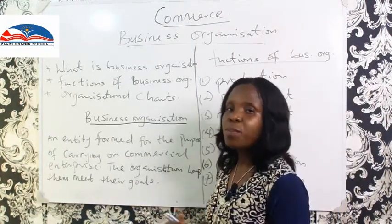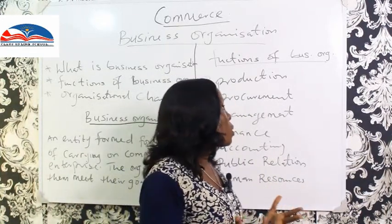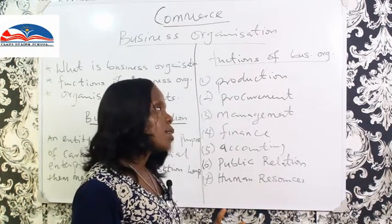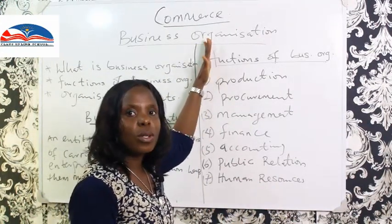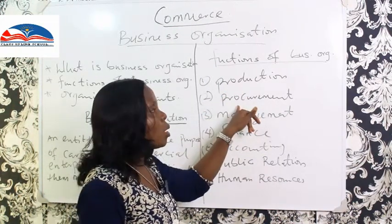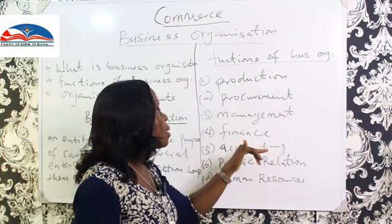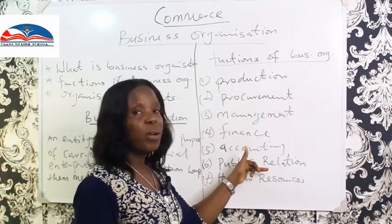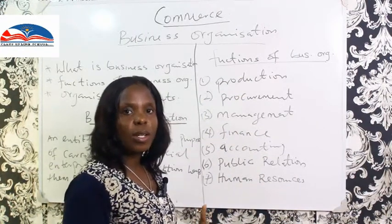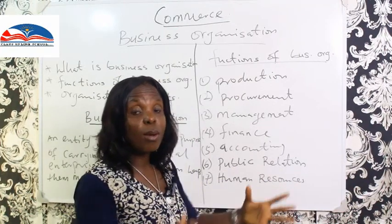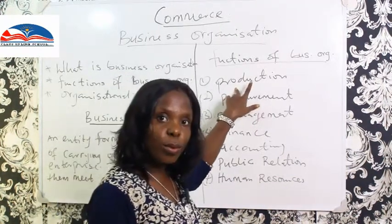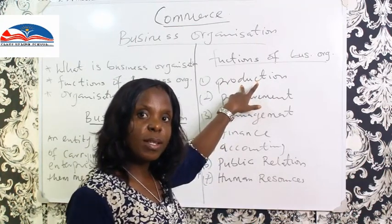Having seen what a business organization is — that's the first objective — let's look at the functions of this business organization. I'm going to talk about seven of these functions: they are involved in production, procurement, management, finance, accounting, public relations, and human resources. A business organization is an entity that comes together for commercial activity, and they have to carry out production in order to make the business function effectively.